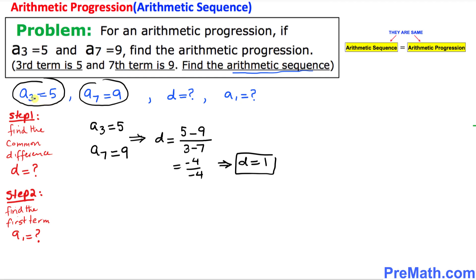I'm going to pick the easier one: a₃ = 5.